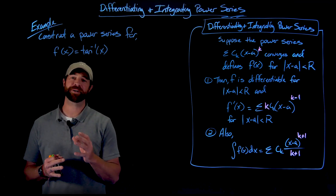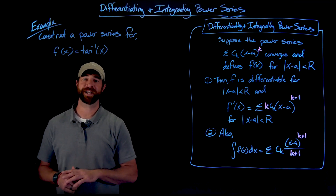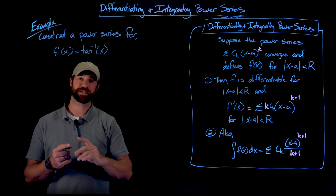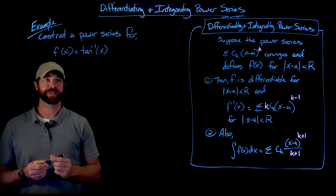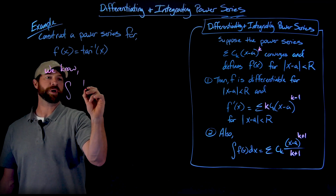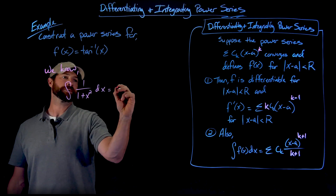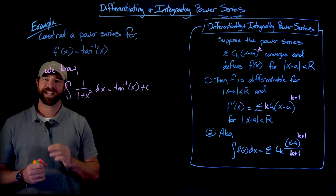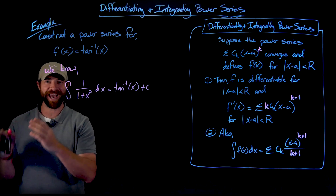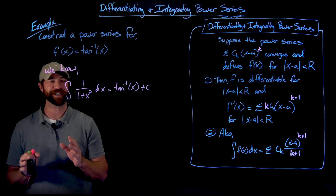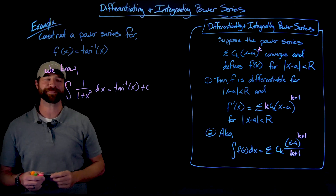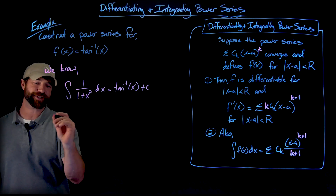In this next example, we're asked to construct a power series for the tangent inverse of x, or the arctangent function. This is a beautiful example that really illuminates why differentiation and integration of power series is useful. What we'll use is the fact that the integral of 1 over 1 plus x squared equals arctan of x plus c. You might think there's no way to relate this inverse trig function back to that 1 over 1 minus x power series we've discussed so much — but that's exactly what we're going to do because of this relationship.